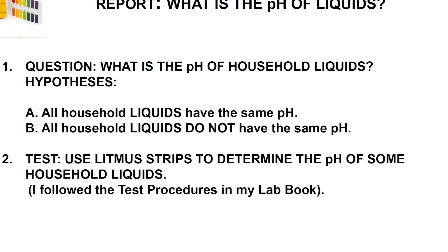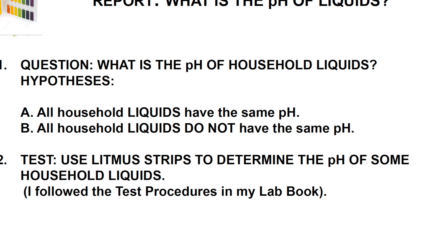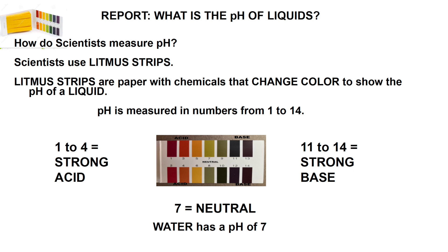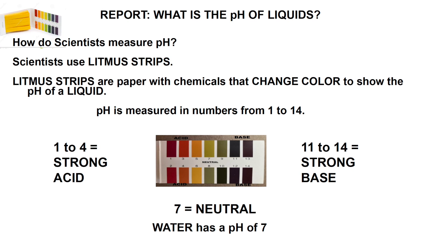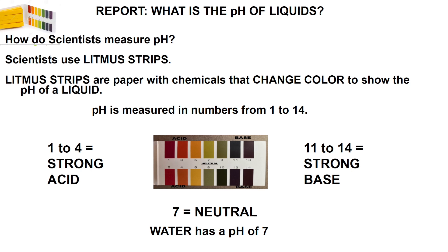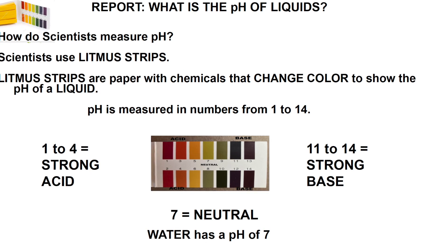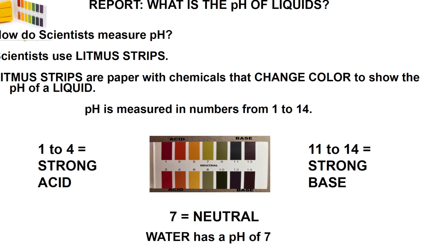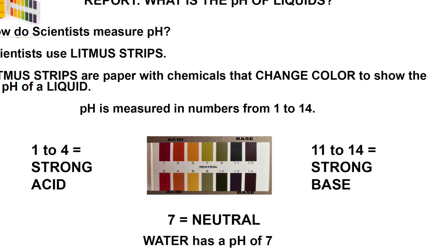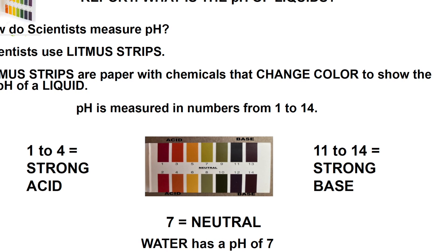We're going to use litmus strips to determine the pH of the liquids you're going to test. Scientists use litmus strips to test for pH. Litmus strips are papers with special chemicals that change color to show the pH of a liquid. pH is measured in numbers from 1 to 14. Number 7 is the pH of water. From 6 to 8 is considered neutral pH. If the pH is from 1 to 4, it's a very strong acid. If the pH is 11 to 14, it's a very strong base.